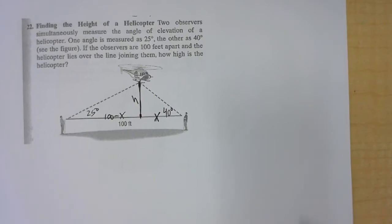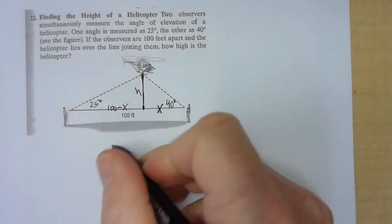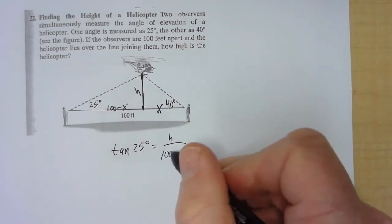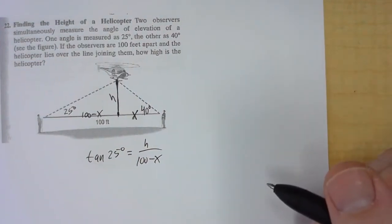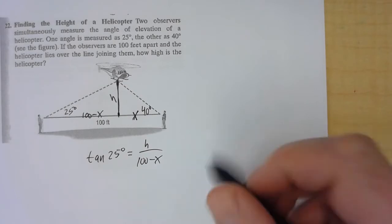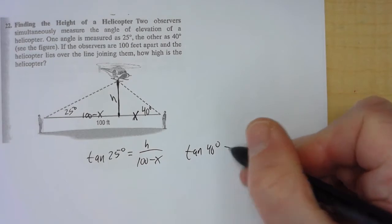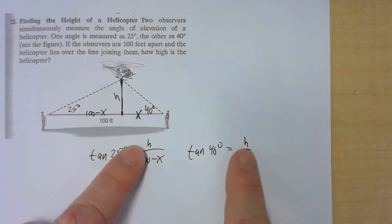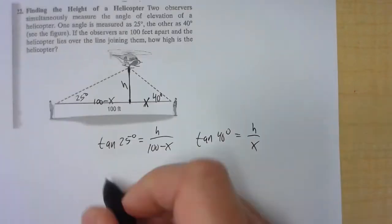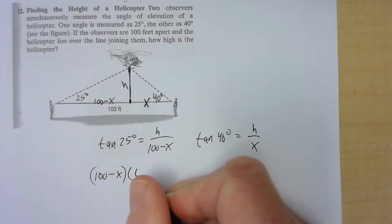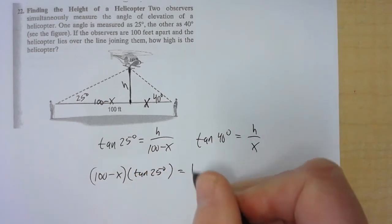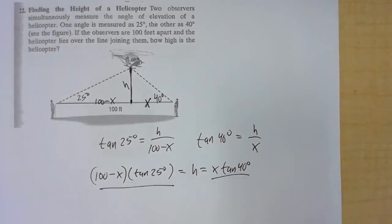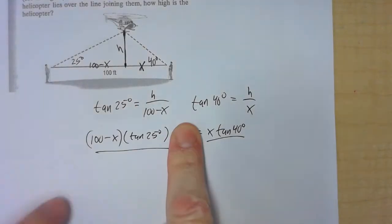Here are the two ratios. Tangent of 25 degrees equals h over (100 minus x), and tangent of 40 degrees equals h over x. Algebraically, I can multiply through and get h by itself — those h's are the same, creating a system of equations. So (100 minus x) times tangent of 25 degrees equals h, which also equals x times tangent of 40 degrees. Those two expressions are equivalent to each other, so you can set them equal and solve for x.